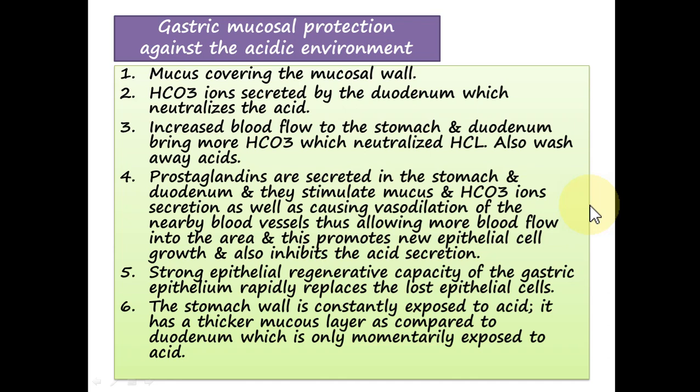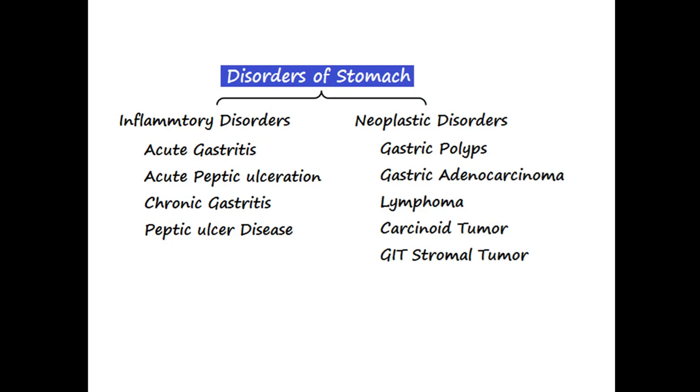Furthermore, the epithelial cells of the stomach have strong regenerative capacity: damaged cells are lost and epithelial cells start dividing and proliferating to provide new cells that replace the lost ones. These are labile cells, which proliferate throughout life. The gastric mucosa is thick because it is persistently exposed to an acidic environment, while the duodenum is comparatively less thick because it is only momentarily exposed to acidic food entering through the pyloric sphincter.